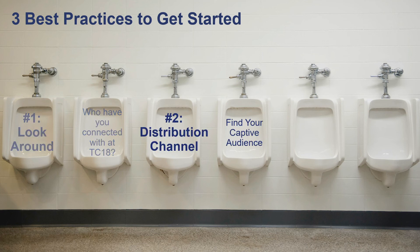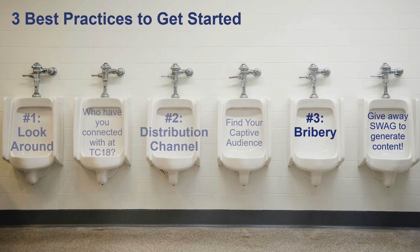Second: find your distribution channel. I leave this picture up here because it's the perfect example of a captive audience. But maybe that wouldn't work for you. Maybe you have a bagel Wednesday once a month and people congregate around the toaster, so you could put this above the toaster and get people's attention. Maybe a printed edition wouldn't work for you at all and instead something online like a newsletter would be the way to get this out there. Just find the way that you can engage with people. And third: when all else fails, bribery.